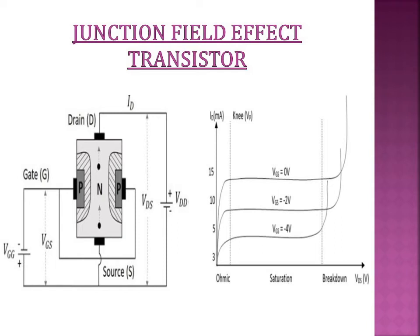This curve shows the IV characteristics of the JFET. There are three regions of operation: linear, saturation, and breakdown. In the linear region, as we increase voltage, current also increases. In the saturation region, irrespective of the increase in voltage, current remains almost constant. In the breakdown region, current abruptly increases.